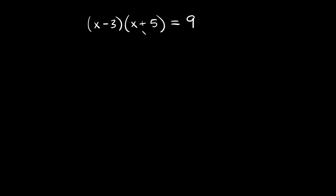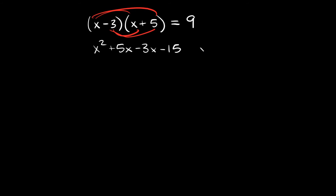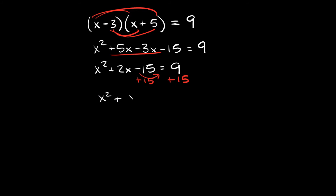Next example: (x-3)(x+5) = 9. First we need to FOIL this. First: x·x = x². Outer: x·5 = 5x. Inner: -3·x = -3x. Last: -3·5 = -15. So x² + 5x - 3x - 15 = 9, which simplifies to x² + 2x - 15 = 9. Add 15 to both sides: x² + 2x = 24.